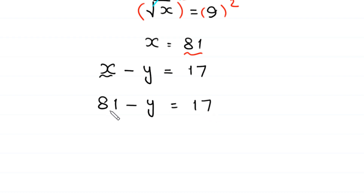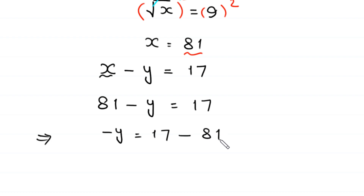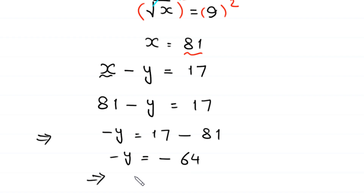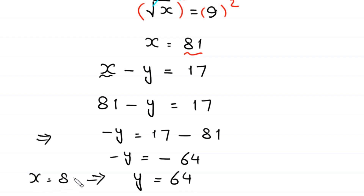Moving 81 to the right-hand side gives negative y equals 17 minus 81, which is negative 64. Dividing both sides by negative 1, we get y equals 64. So the value of y is 64 and the value of x is 81.